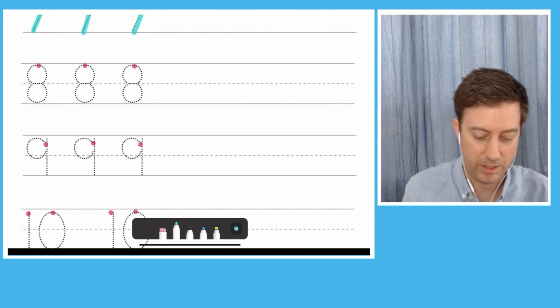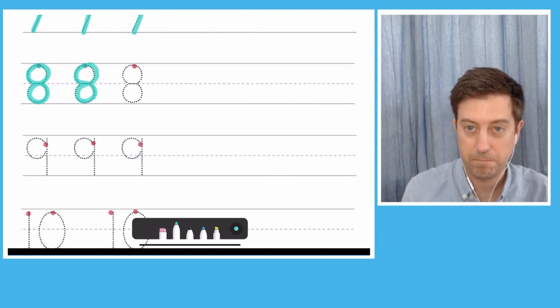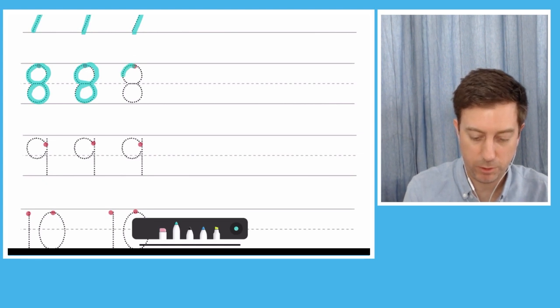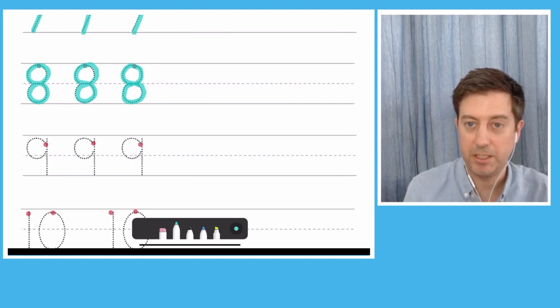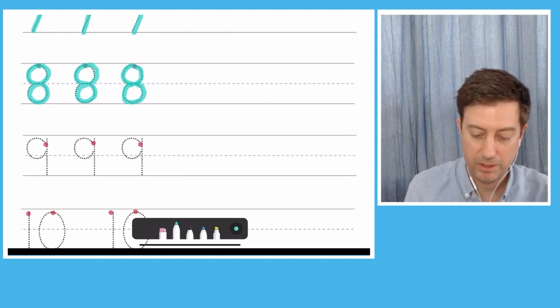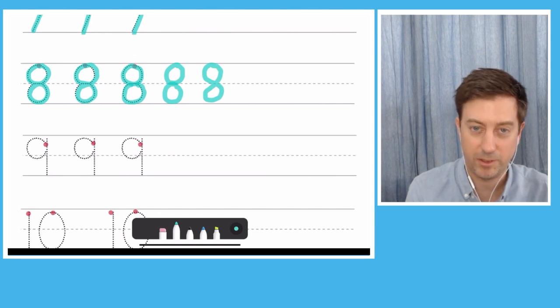Number eight, starting at the top, you're going around, and around, okay. Now I have seen some people, they'll simply make two circles. Same thing, okay, maybe easier to make two circles, like this, because this is a long line to draw.